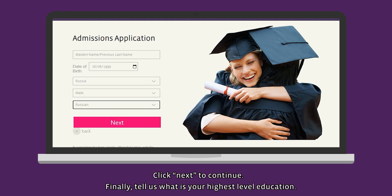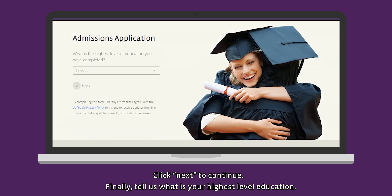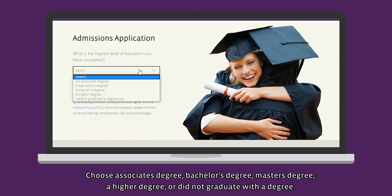Click Next to continue. Finally, tell us what is your highest level of education. Choose associate's degree, bachelor's degree, master's degree, a higher degree, or did not graduate with a degree.